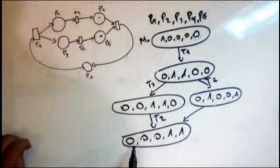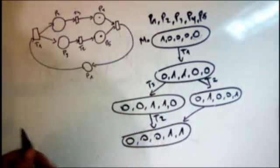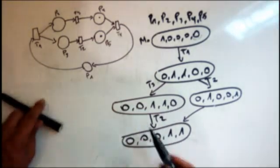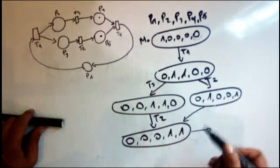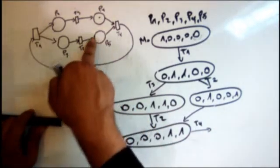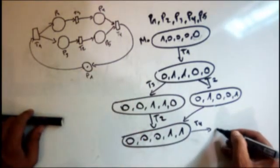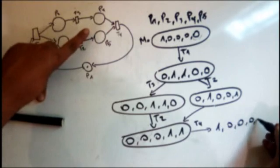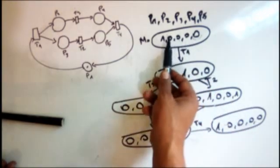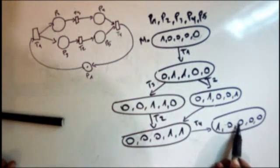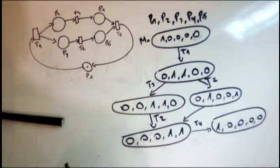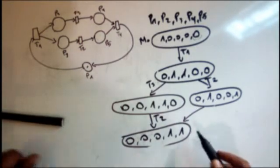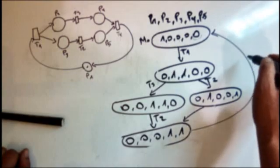From the marking (0,0,0,1,1), let us call the available transition T4. From this marking we can only fire T4. When we fire T4, we remove the tokens from p4 and p5 and add one token to p1. We get: one for p1, zero for p2, zero for p3, zero for p4, and zero for p5. We notice this is the same as the initial marking, so from this state with T4 we go back to the first state.